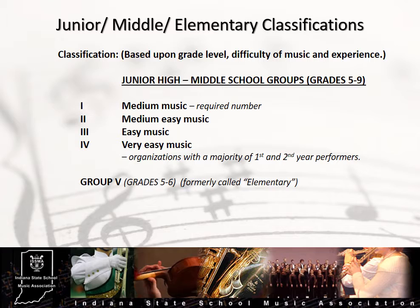A Group 3 ensemble consists of developing second-year players performing easy music. In Group 2, ensembles consist of more proficient second- and third-year players performing medium-easy level music of a little more challenging nature. Group 1 is the highest level of performance, consisting of advanced middle school and junior high players performing medium-level music.